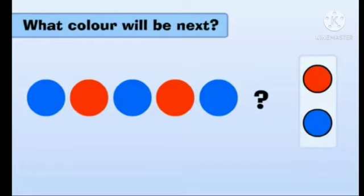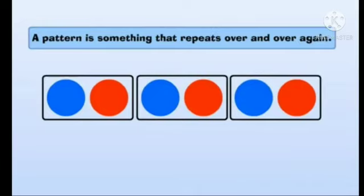See the next picture — first it is given blue color, then red, then again blue, then red, then again blue. What color will be next? Yes, the next color will be red. So: blue, red, blue, red, blue, red — it is the same pattern. A pattern is something that repeats over and over again.